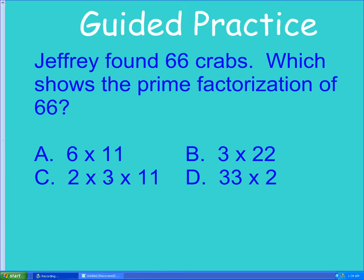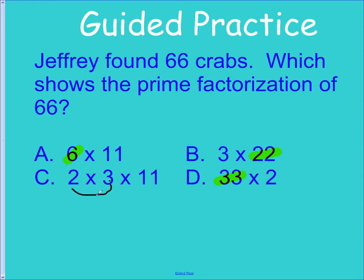Sorry about that guys, my computer kind of crashed out on me a little bit. So as I was saying, 6, 22, 33 are all composite. And if we wanted to check this last one, 2 times 3 is 6, 6 times 11 is 66. And that is true, and all of those numbers are prime.